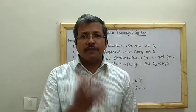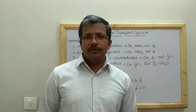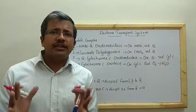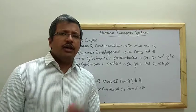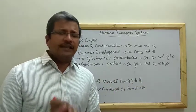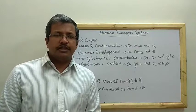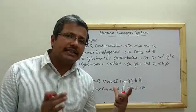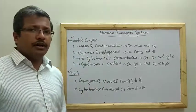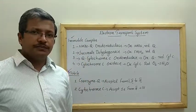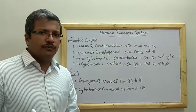In the electron transport system we can see two types of components: the mobile component and the immobile component. Immobile components are fixed within the inner mitochondrial membrane — they do not move. Mobile components act as carriers that can move from one complex to another. In the immobile category there are four complexes: complex one, complex two, complex three, and complex four.